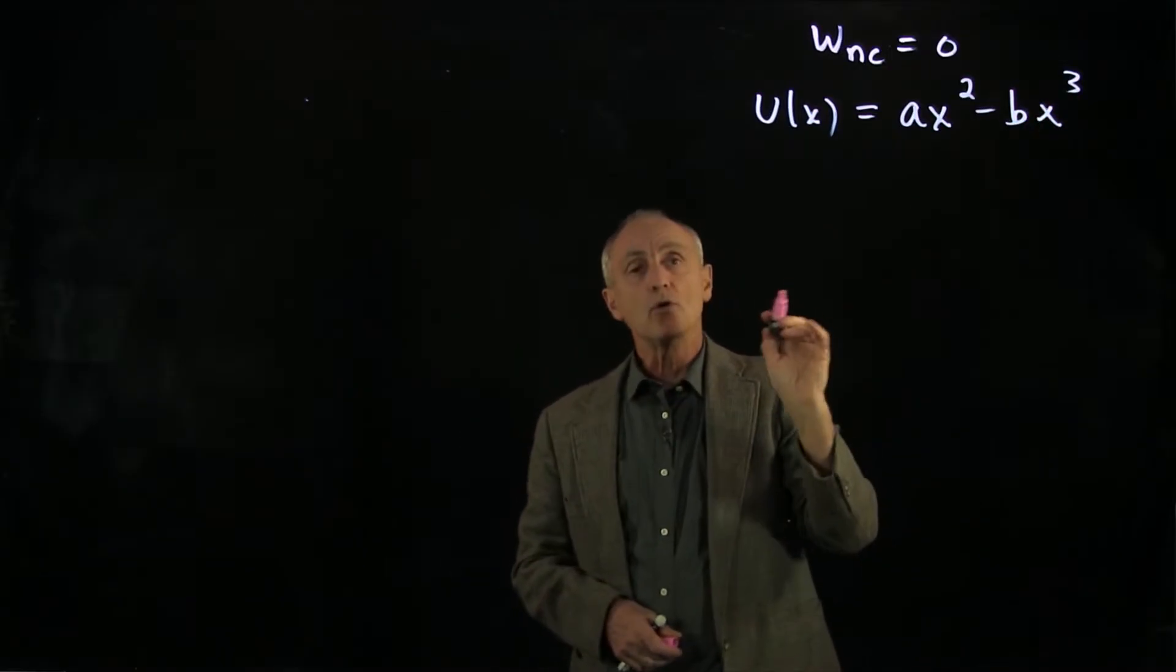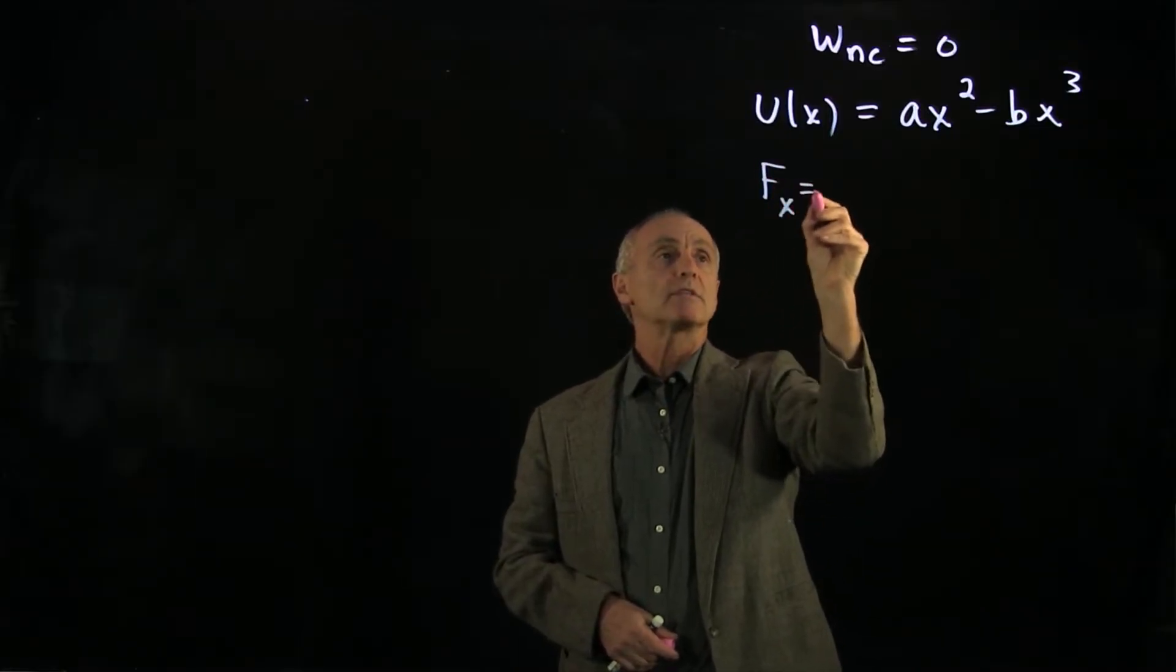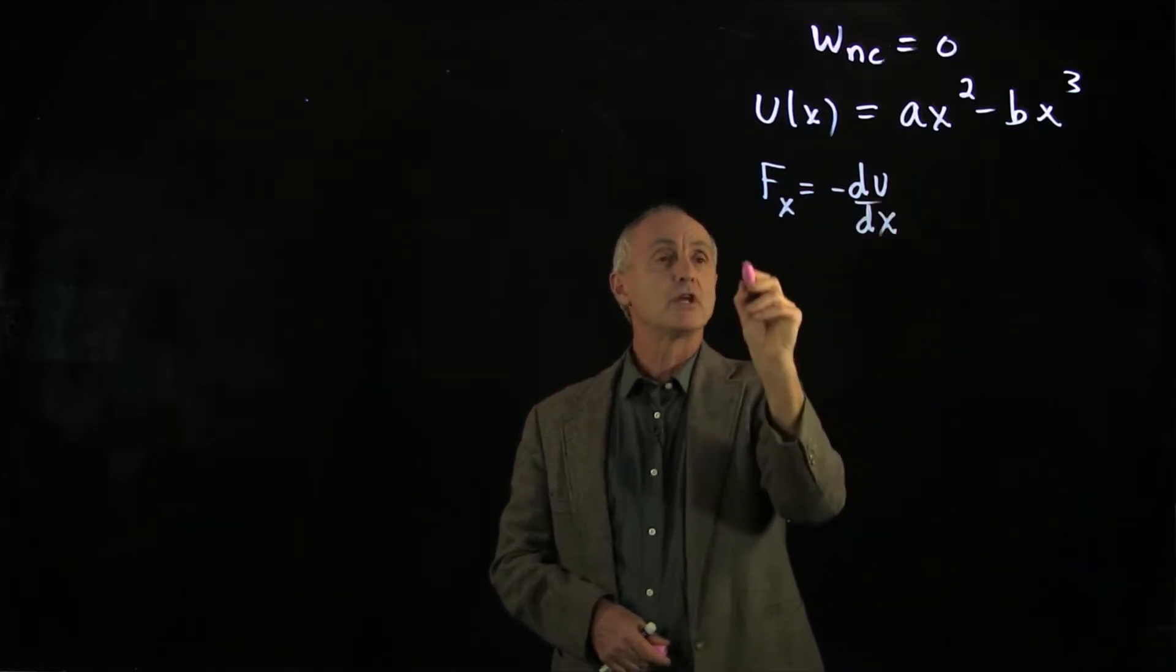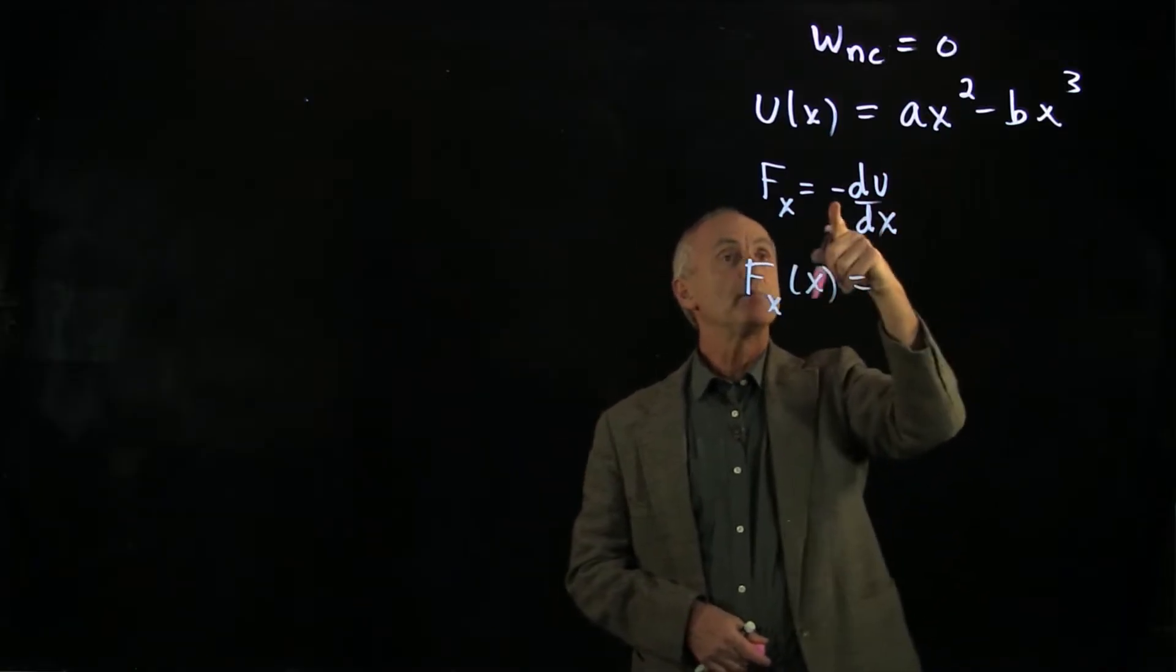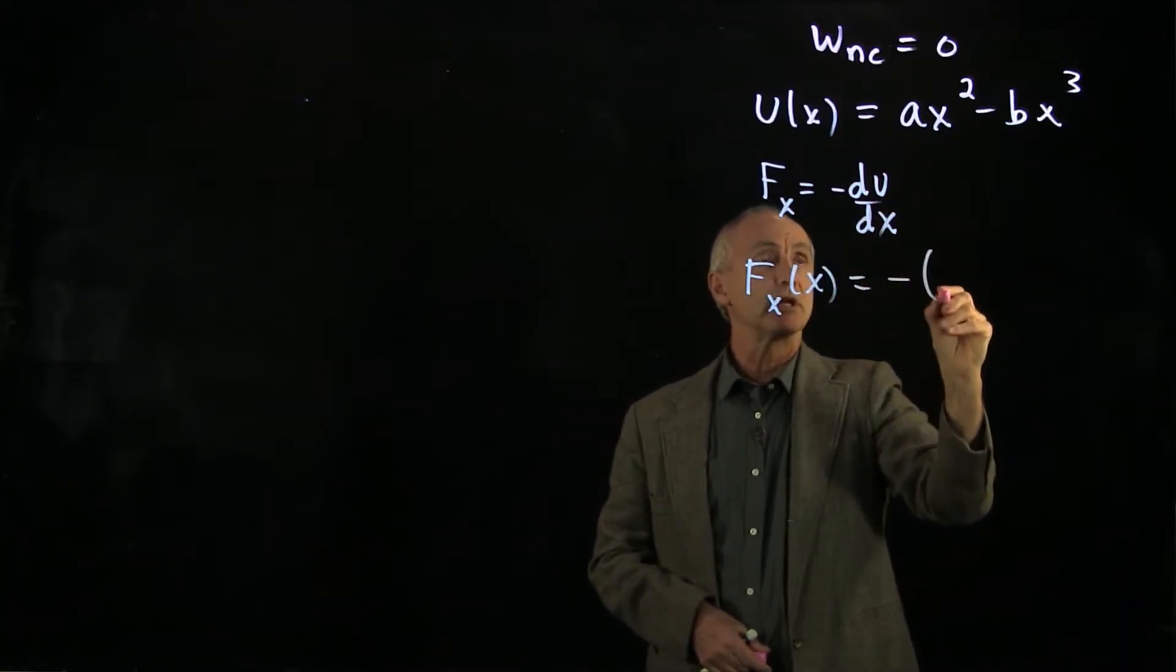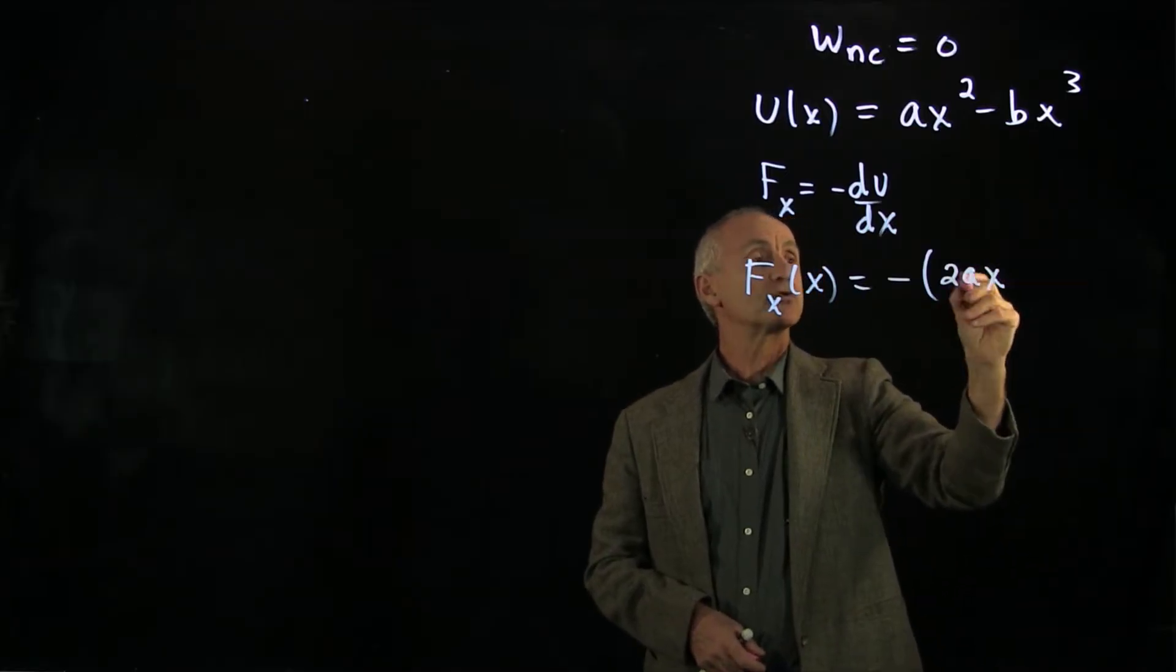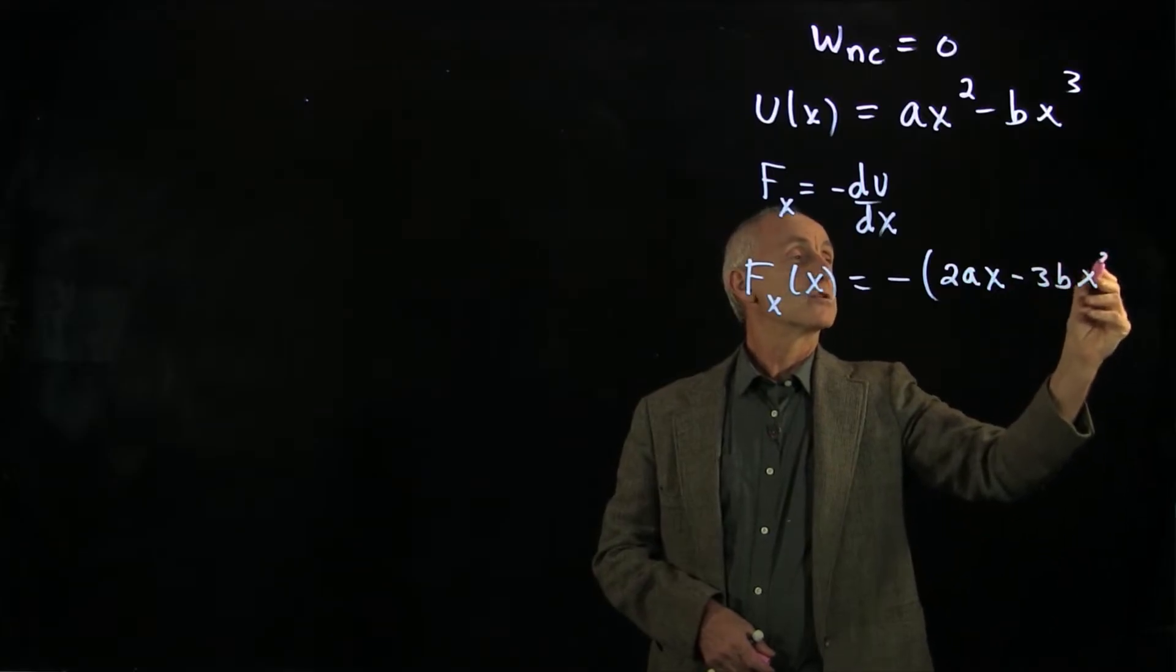We know that our definition of force is that it's minus the change in potential energy, Fx = -dU/dx. If we differentiate this, our force is a function of x. Because of that minus sign, you always have to be careful when you take that derivative. We get 2ax - 3bx² for the force.